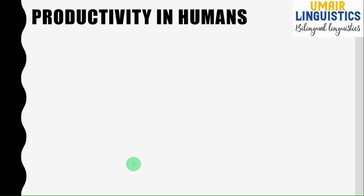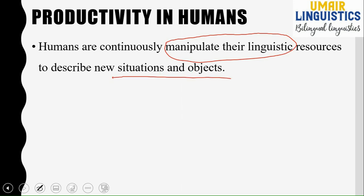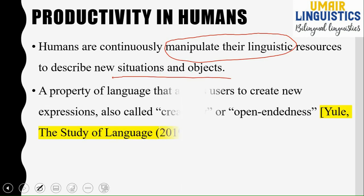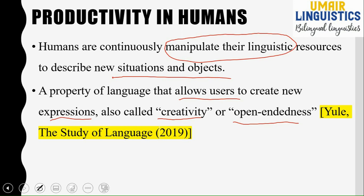First of all we will discuss productivity in human language. It doesn't mean productivity in the sense of offspring — it means productivity in language because we are discussing linguistics. Humans continuously manipulate their linguistic resources to describe new situations and objects. The formal definition: a property of language that allows users to create new expressions, also called creativity or open-endedness.